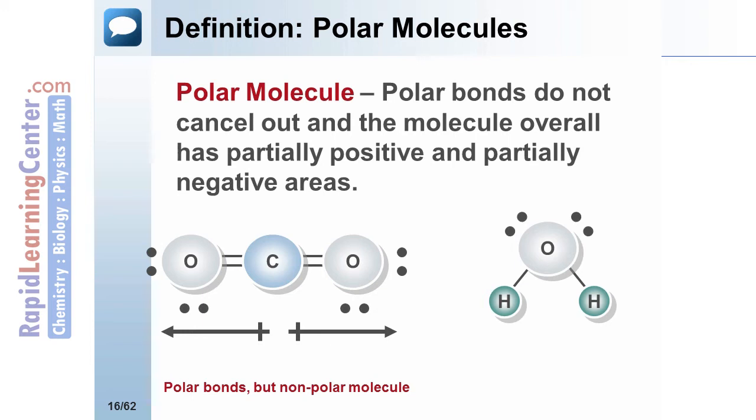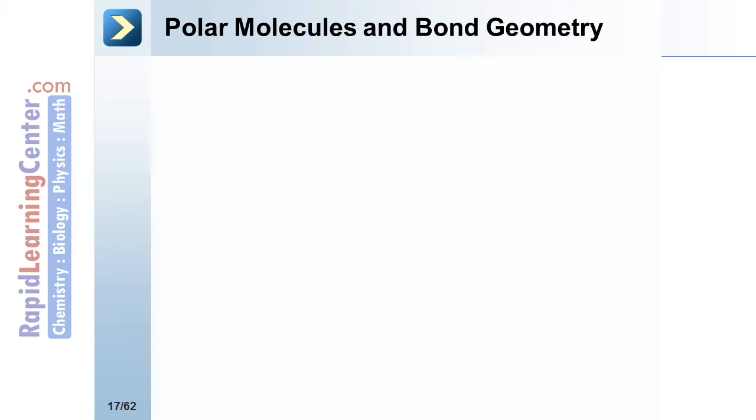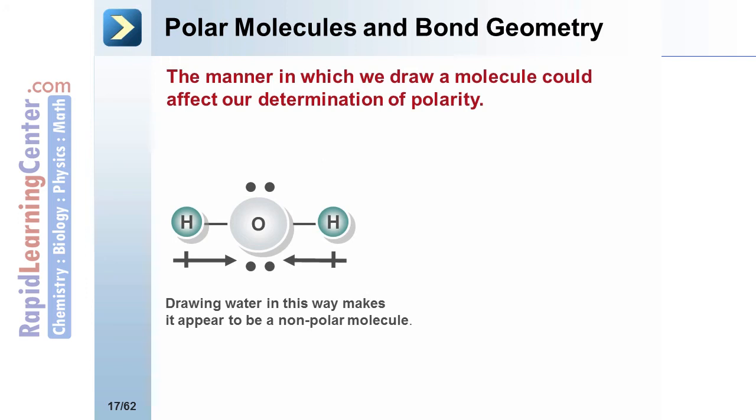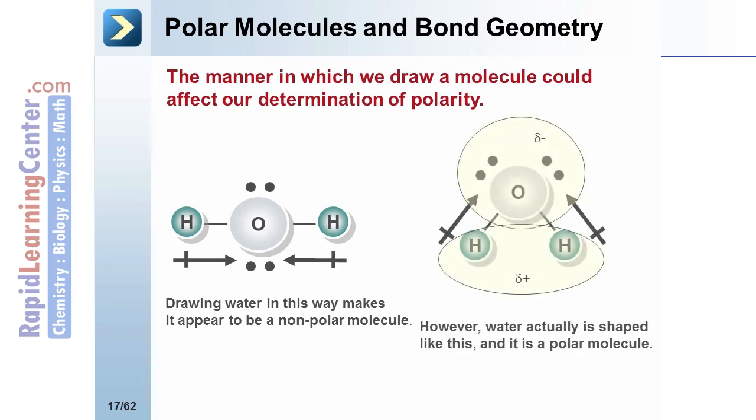Water also has two polar bonds. However, they do not cancel out. There is an overall polarity to the water molecule. It is important, when determining if polar bonds cancel out, to envision the molecule as it actually exists. If water is drawn horizontally, the polar bonds appear to cancel. However, it does not exist in that shape, but rather it's bent. The 3D structure of the molecules will be discussed in a future tutorial.